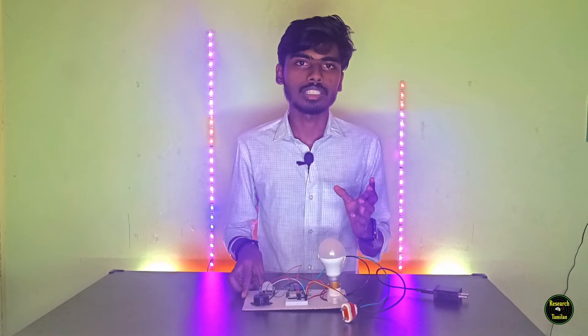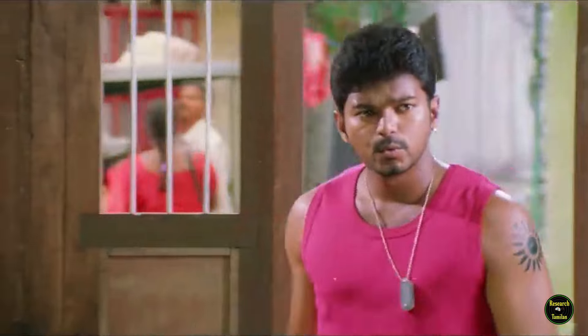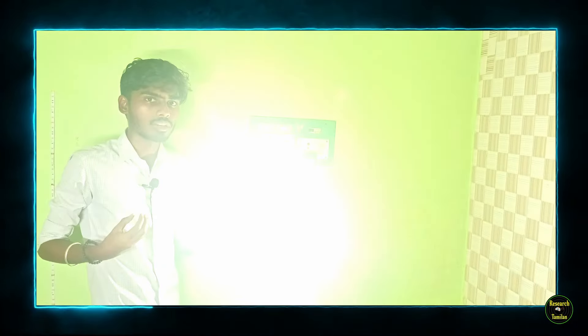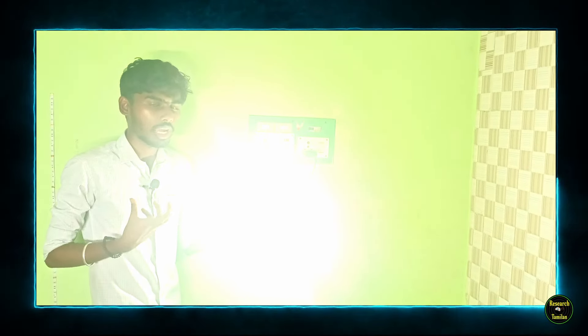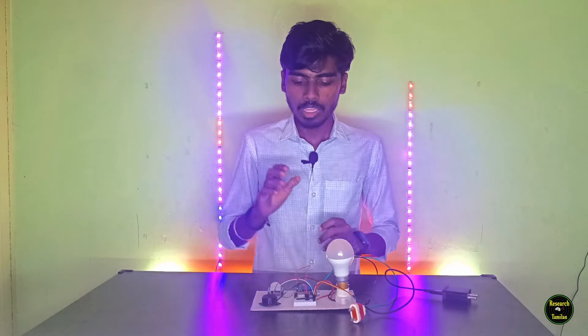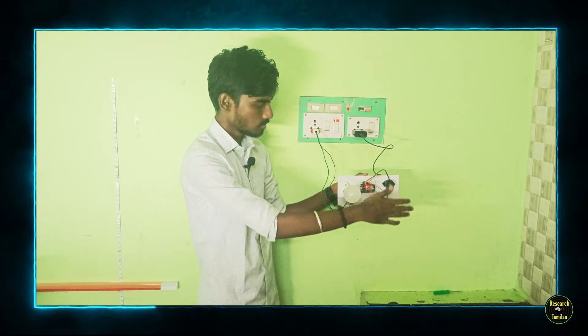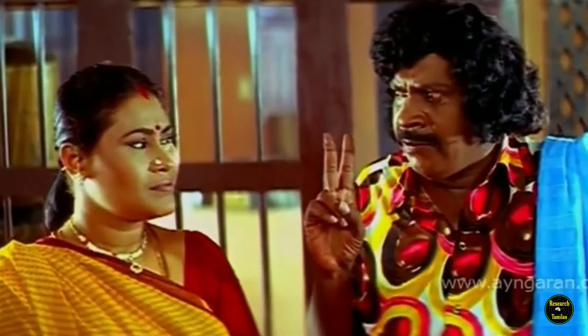Now, if we have motion in the room, we have a light automatically on-off control. That's why we have a switch for automatic light on-off control. We also have a security system. If we have motion in the room, we have a PIR sensor, we have a buzzer, and then we have a light on-off control.